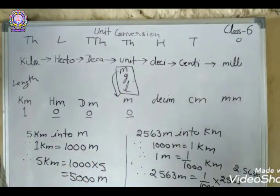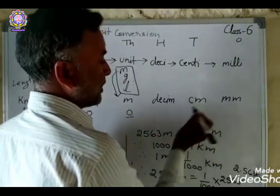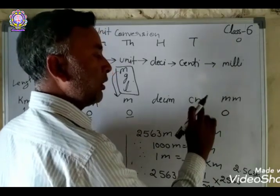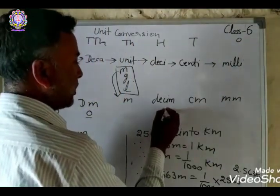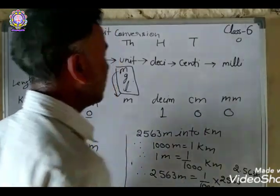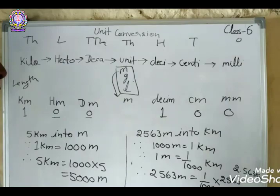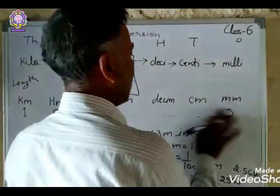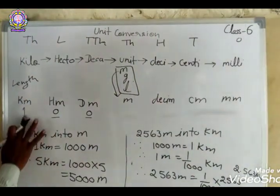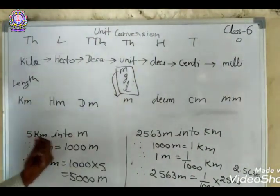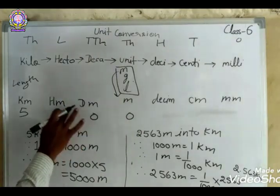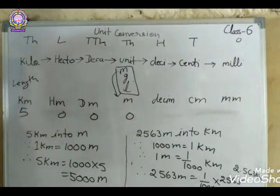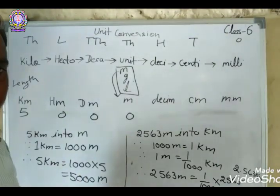The same method applies for length. You can also directly solve by placing the number in the table. For 5 kilometers into meter: put 5 in the kilometer column and write three zeros — you get 5,000 meters. It is very easy once you understand the table method.